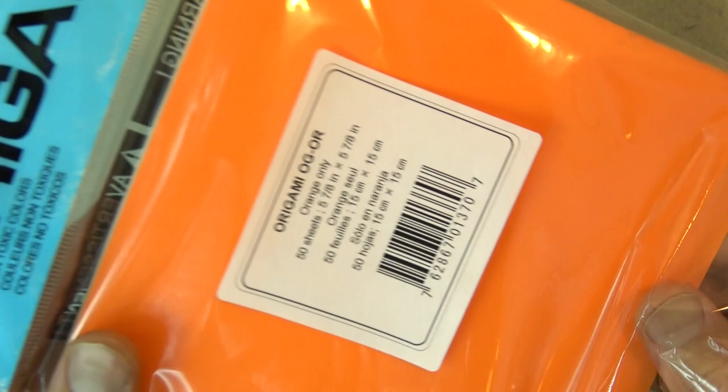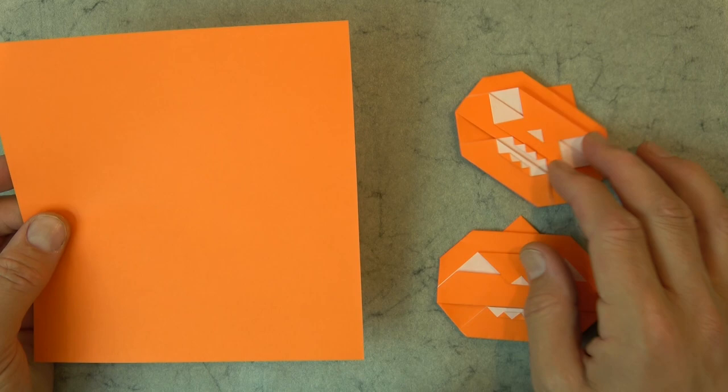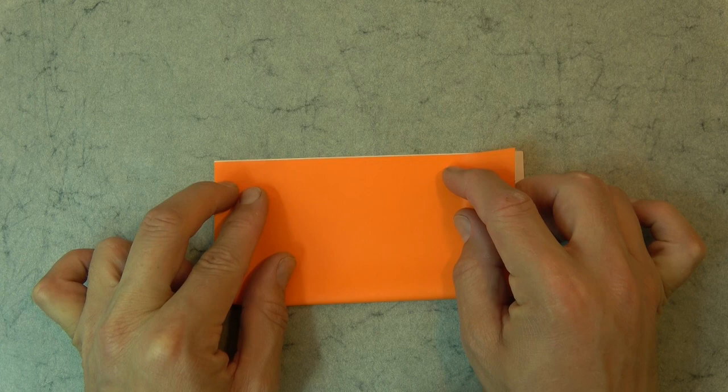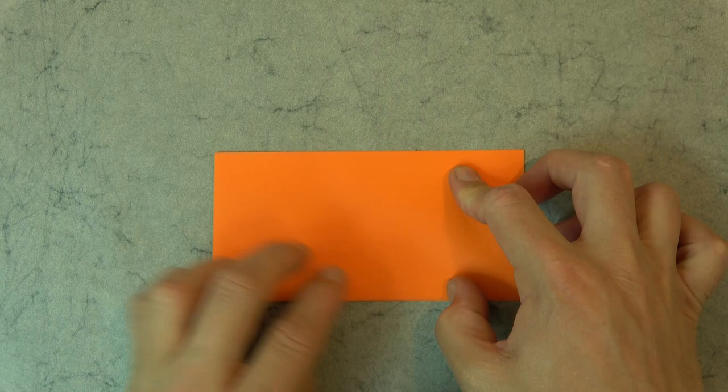Alright, so for these Jack-O-Lanterns, I'm going to use a 6-inch square of Kami. You could use a sheet of printer paper cut square, but then you're not going to have the facial features, unless you color one side of the sheet of printer paper so that you have one side colored and one side white. Let's begin white side up and fold in half. Try to make really precise folds and crease sharply. Now rotate and fold in half in this direction.